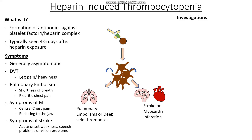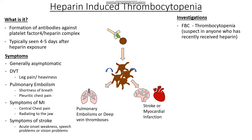For investigations, since HIT is usually asymptomatic, the first step is a full blood count, which often shows thrombocytopenia. It should be suspected in anyone who has recently received heparin. To diagnose and stratify risk, we use the four Ts criteria: the degree of thrombocytopenia, the timing of onset after heparin administration, the presence of thromboses, and potential other causes for the thrombocytopenia. The key point is seeing thrombocytopenia and linking it to the timing of heparin administration.